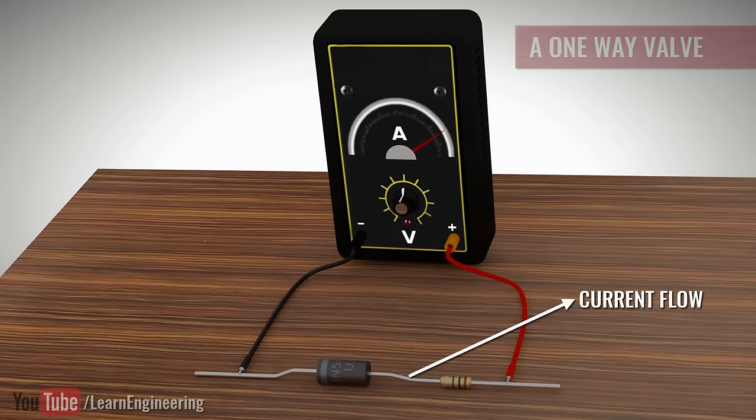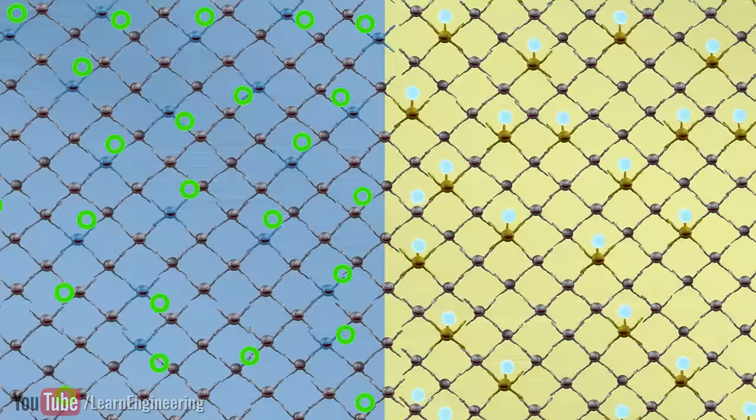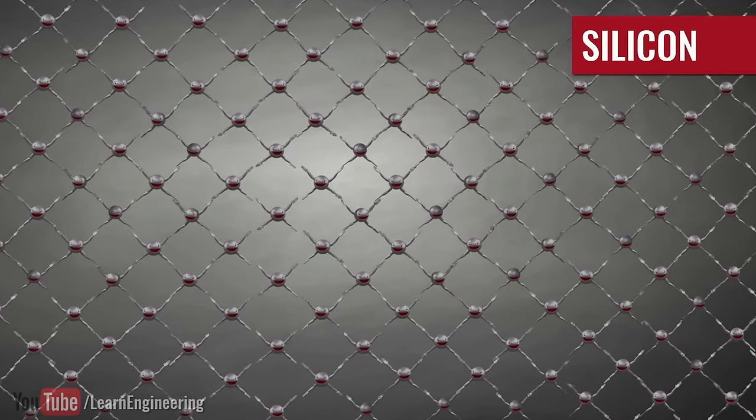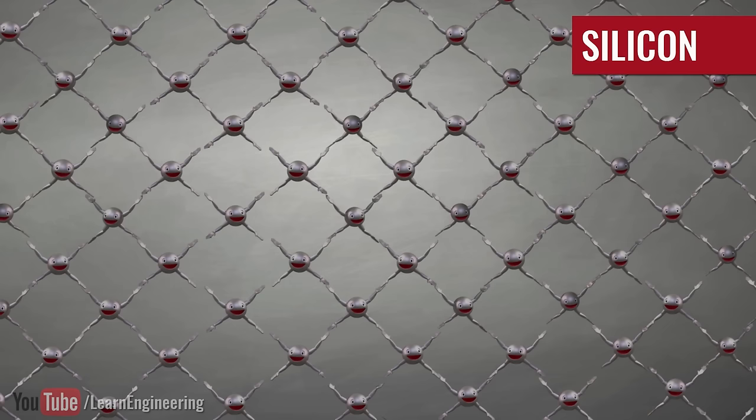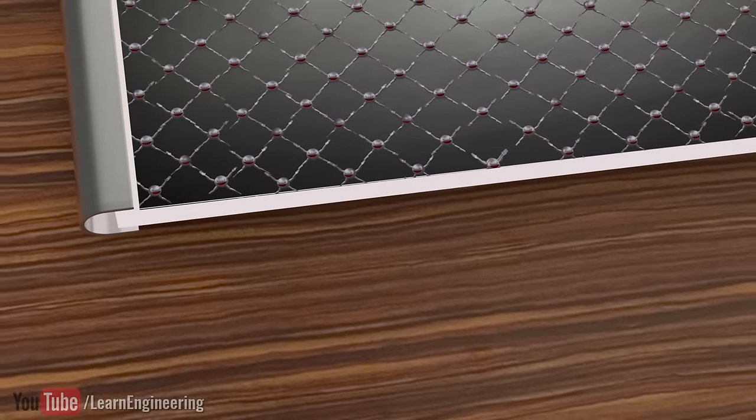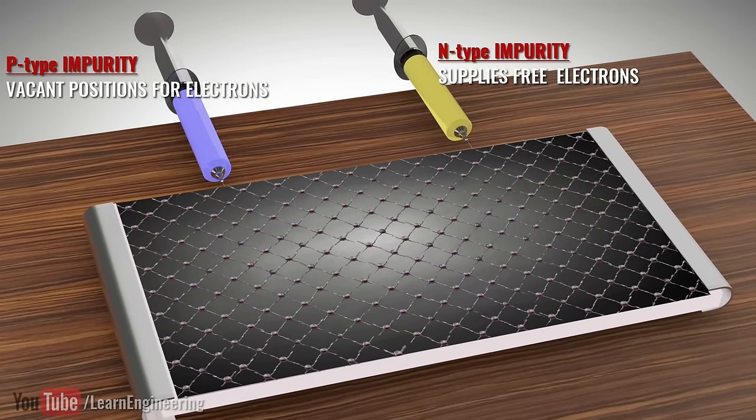Let's take a look at the internal structure of a diode. The diode is made of a semiconductor such as silicon. Pure silicon does not have any free electrons, but the silicon used here is not pure. One part is doped with N-type impurity and the other part is doped with P-type impurity.